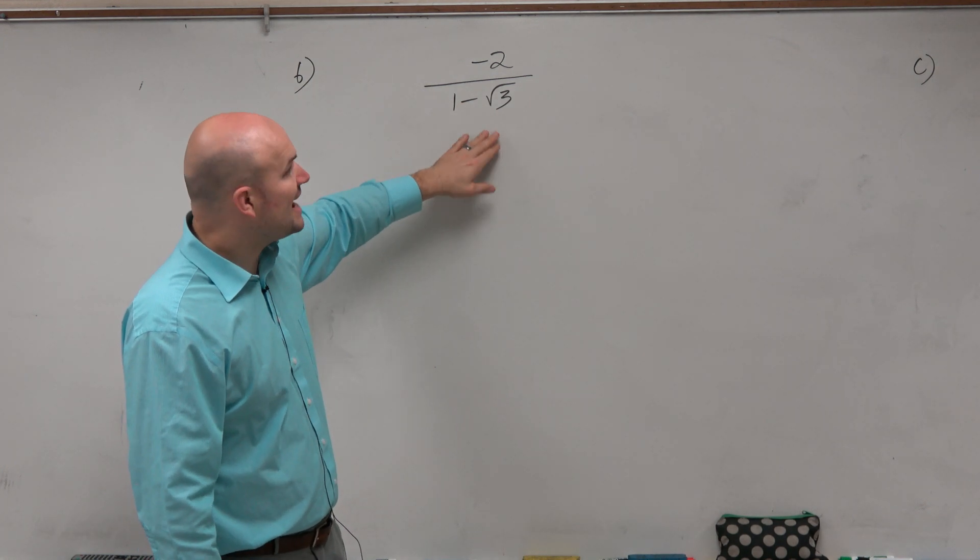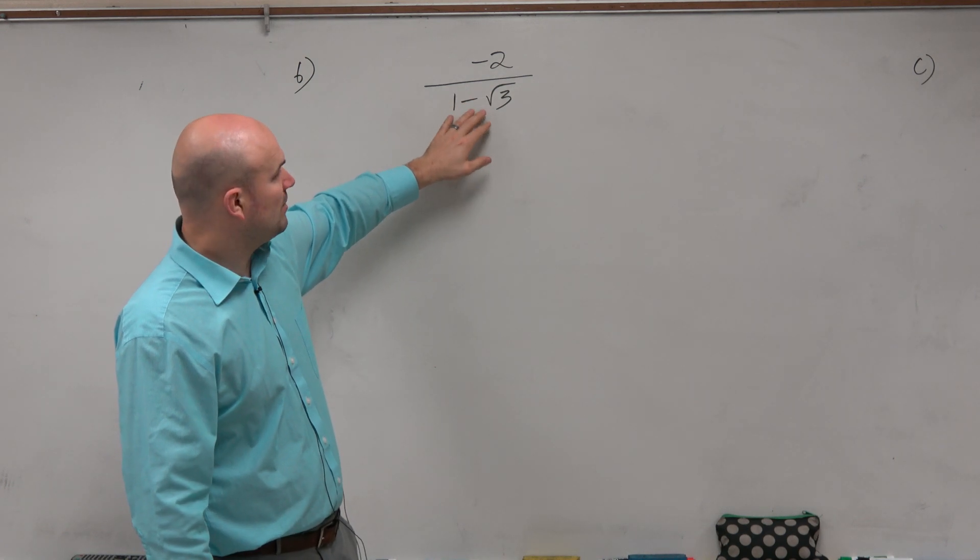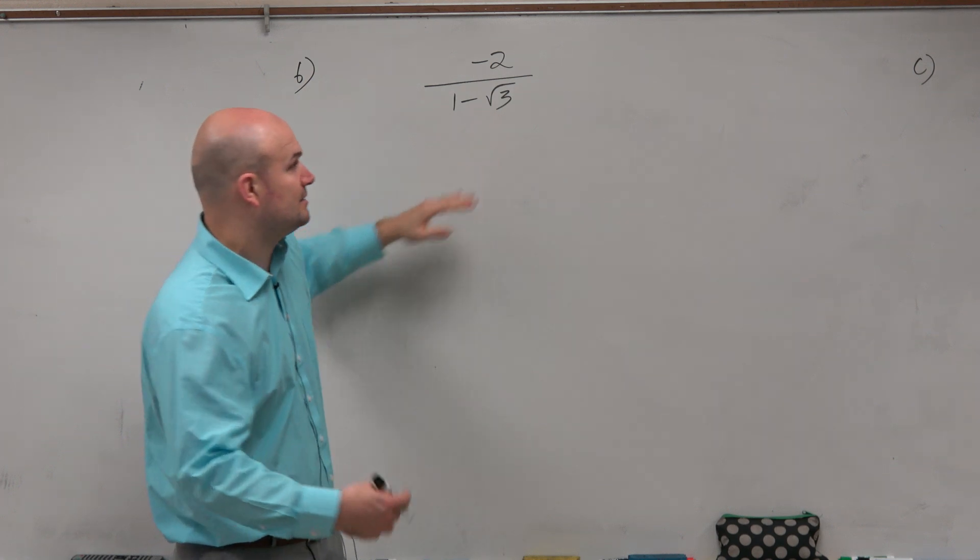And if you guys remember, that is how you get rid of the denominator - you multiply by its conjugate. We did multiply by 1 minus square root of 3, and by multiplying by its conjugate, you eliminate the radical.